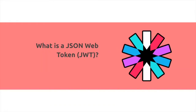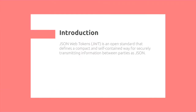JSON Web Tokens are an open standard that defines a compact and self-contained way for securely transmitting information between parties as JSON. Compact means that it uses up less bandwidth over the network compared to a format like XML. Self-contained refers to the fact that this can be a stateless protocol — all the information with respect to unpacking the JSON Web Token is contained within the token itself.